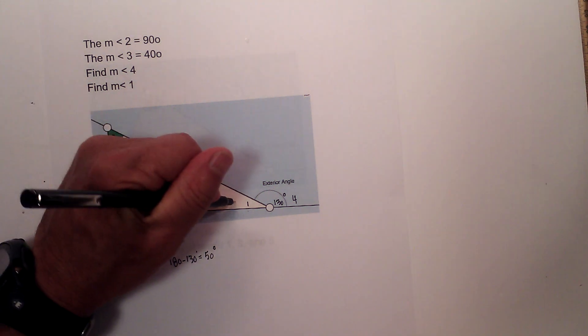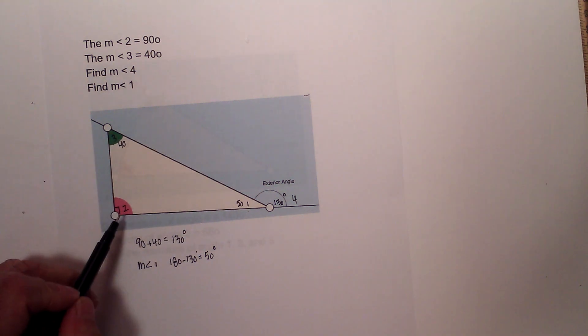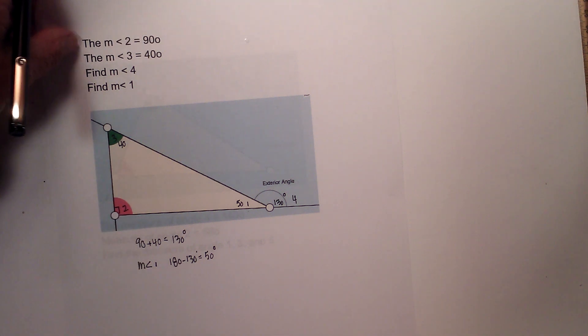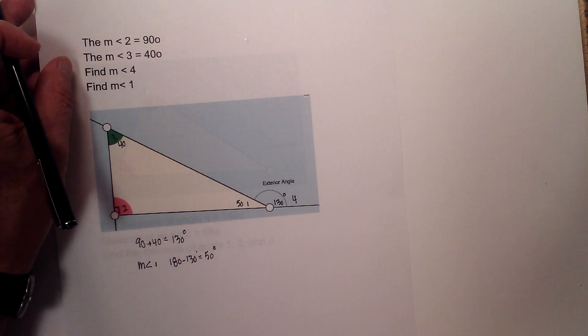Now we can check that. If this is 50 and this is 90, 50 plus 90 is 140 plus 40 is 180 because we know the interior angles of a triangle equal 180 degrees.